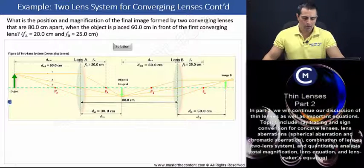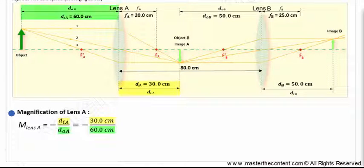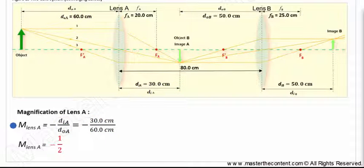Let's get started by finding the magnification of lens A. We'll begin with the magnification equation for lens A. The image distance and object distance for lens A are 30 centimeters and 60 centimeters, respectively. Upon solving, we find that the image produced by lens A is one half the original size. And the negative sign tells us that the image is inverted.